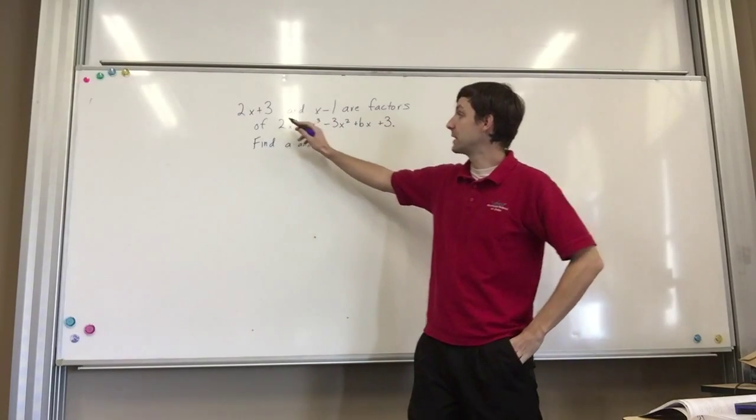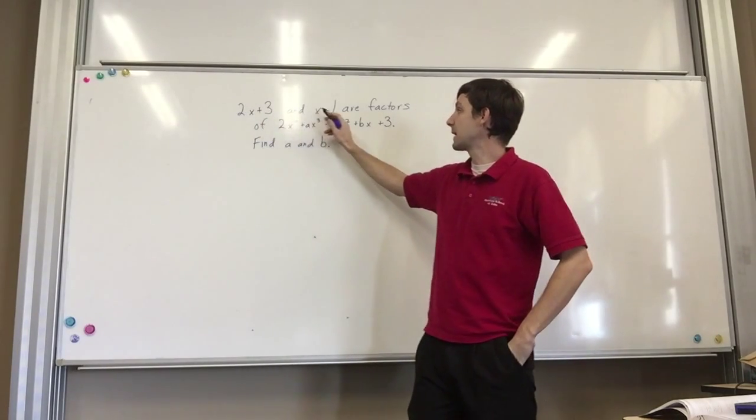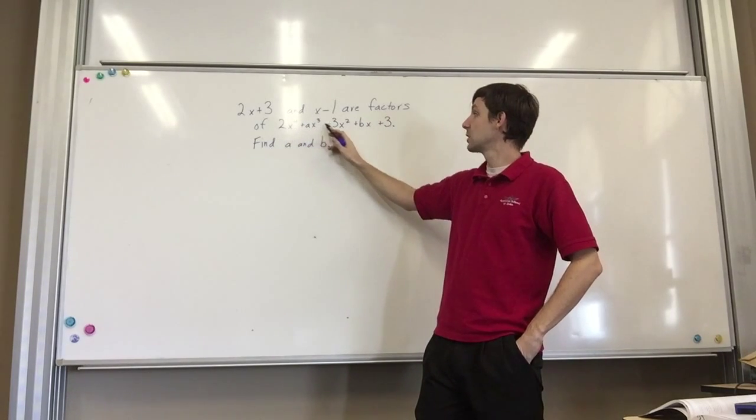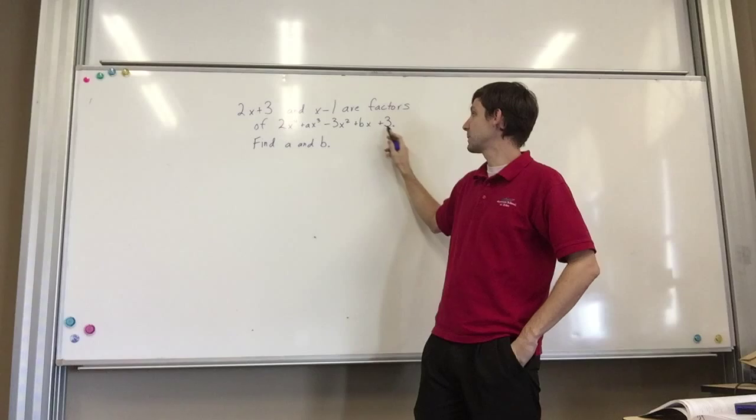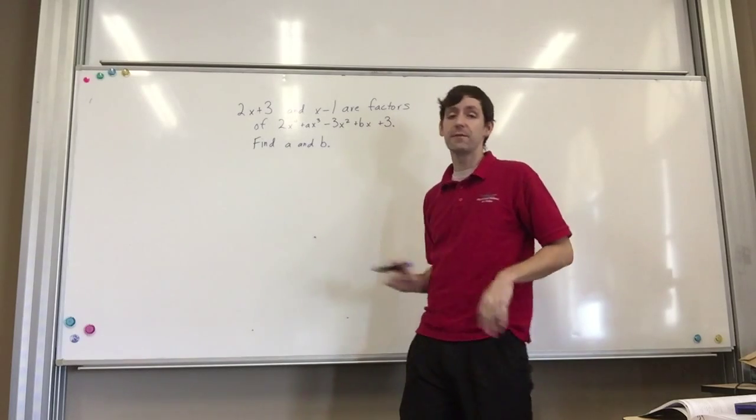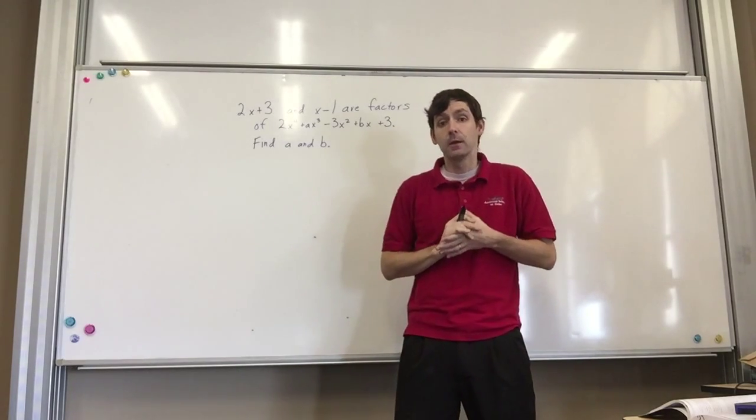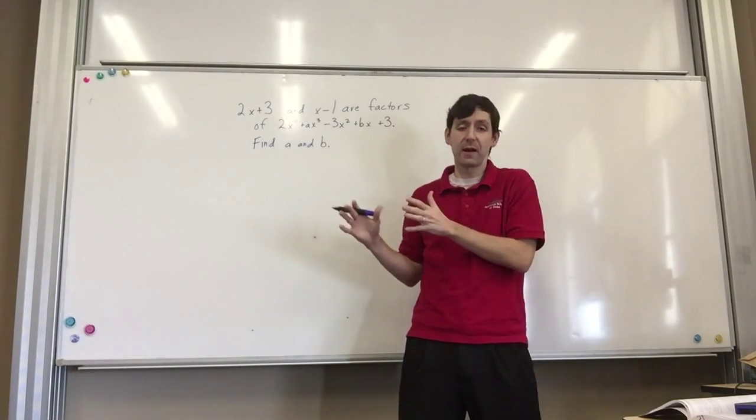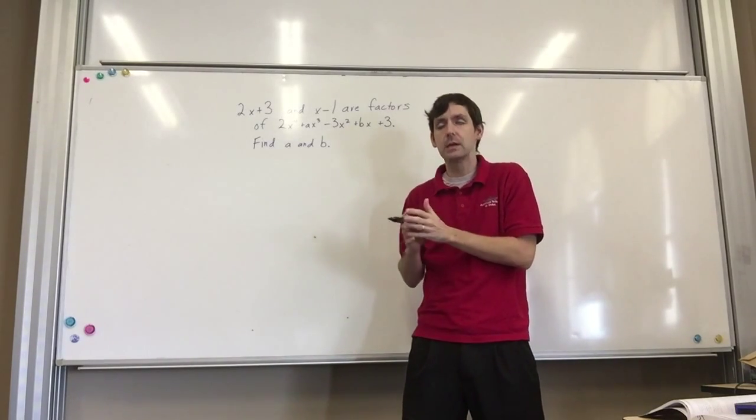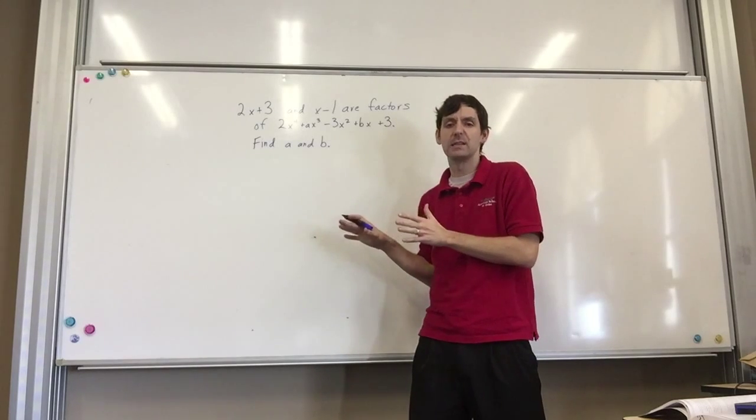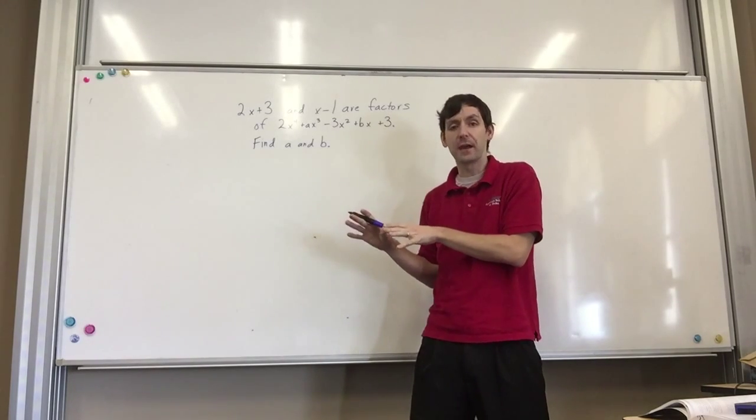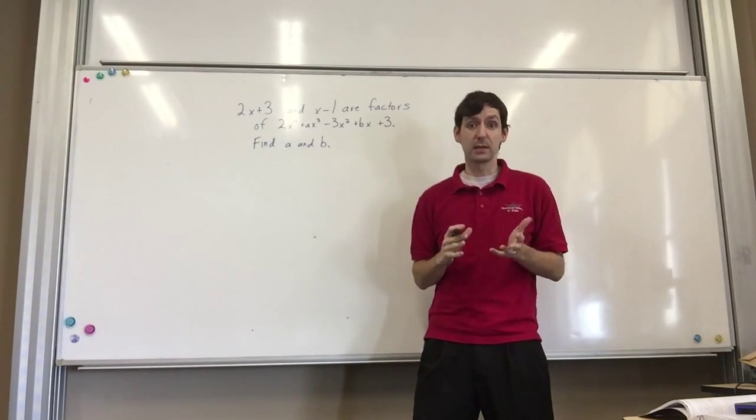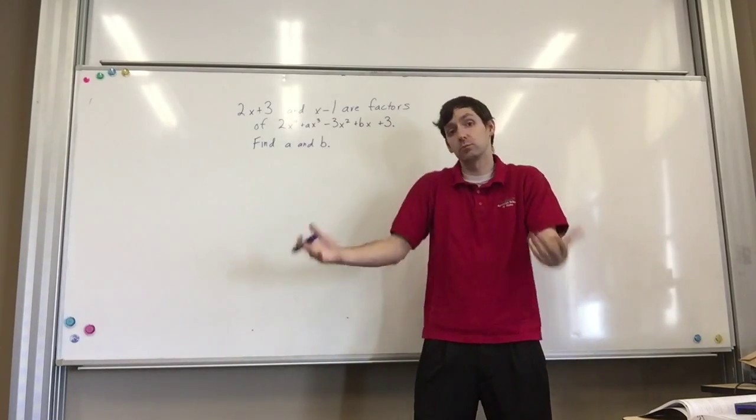Now the problem here is that 2x plus 3 and x minus 1 are factors of 2x to the 4th plus 8x, 3x cubed minus 3x squared plus bx plus 3, and we're supposed to be finding a and b. Now the original question, as you'll notice on the website, said that we should also be finding the zeros and the roots. I'm not going to worry about that here because I'm just finding a and b. Once you get there, then the process is the same as in the other video which is on the website.